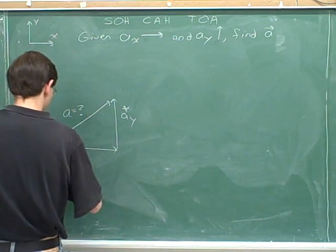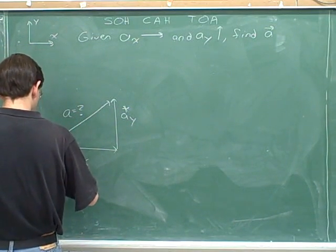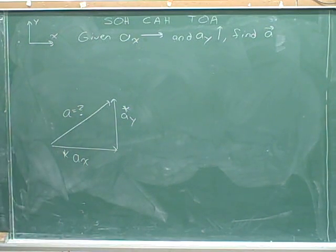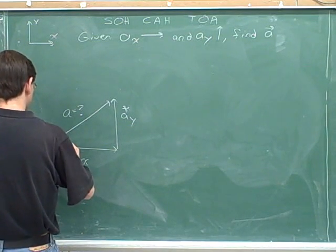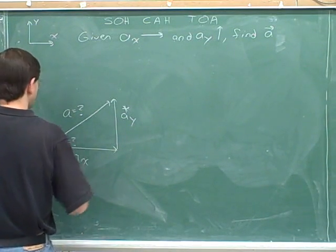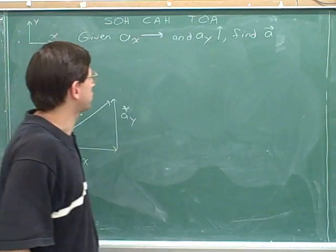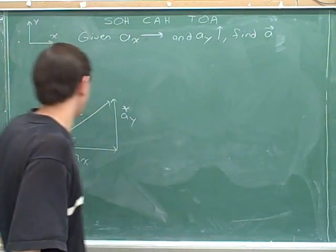The components are what we were given or told to treat as givens. In order to indicate the direction, we're going to have to figure out this angle theta. In order to answer the question, we need a magnitude and a direction.